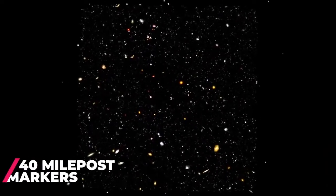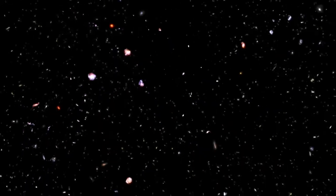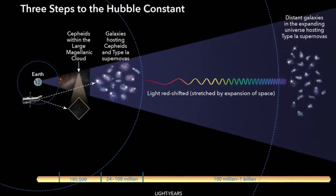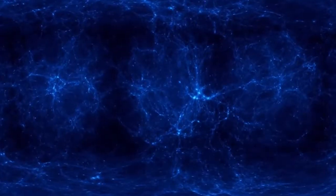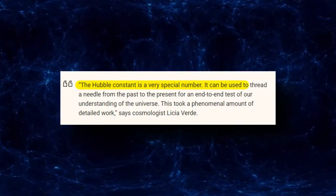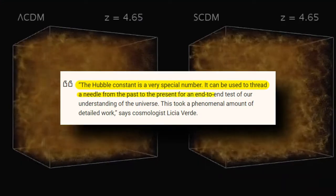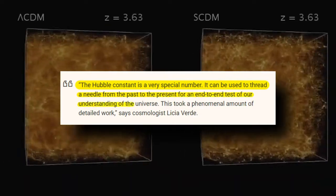And has been able to calculate the expansion rate to a precision just above 1%. This telescope has calibrated more than 40 milepost markers used by scientists to calculate the precise rate of cosmic expansion, which is known as the Hubble constant. One cosmologist, Dr. Licia Verde, has attested to the importance of this constant, stating, the Hubble constant is a very special number. It can be used to thread a needle from the past to the present and from end-to-end test of our understanding of the universe.